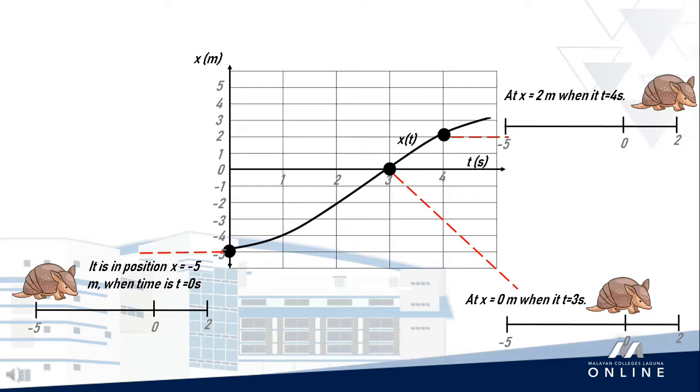This position-time graph actually reveals how fast the armadillo moves. As we talk about how fast an animal or a particle in general is moving, we can associate it with the term average velocity, which is the ratio of displacement or change of x that occurs during a particular time interval or change of time.